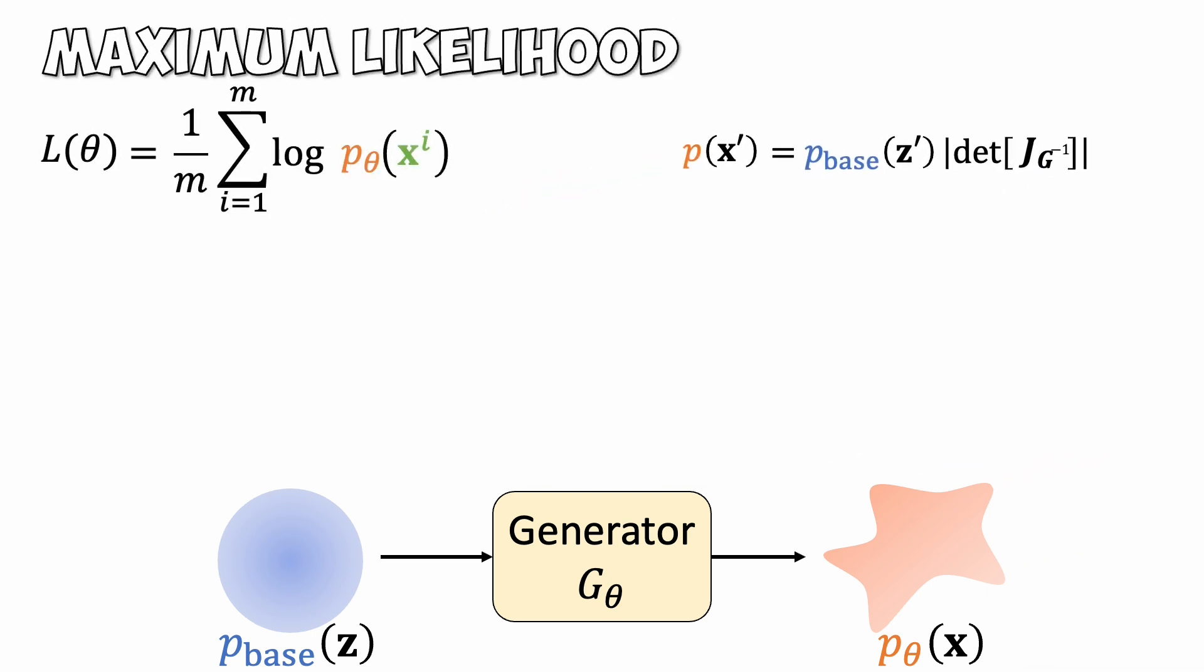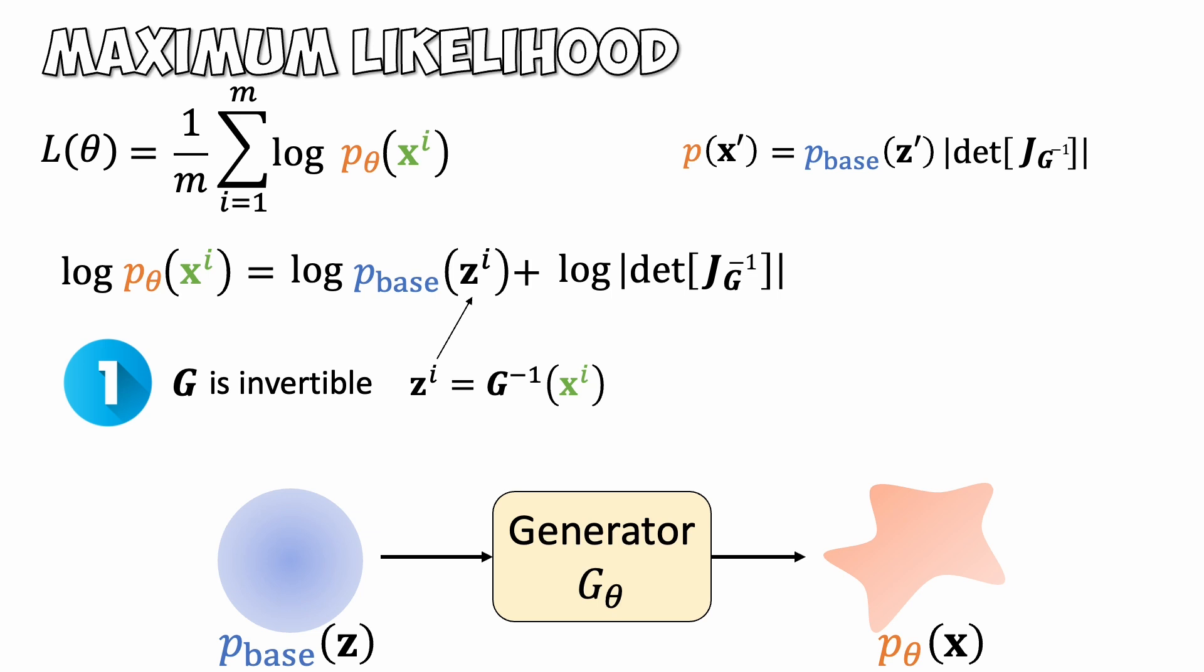Now get back to the maximum likelihood estimation. Using this formula, we can write the local likelihood into two terms. How do we compute this? First, we need an invertible generator g. Second, we need a way to compute the determinant of the Jacobian matrix efficiently.